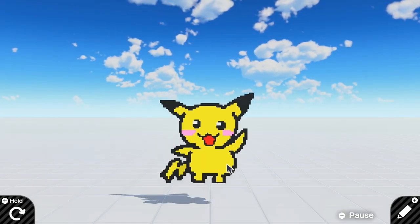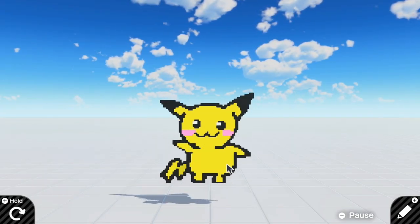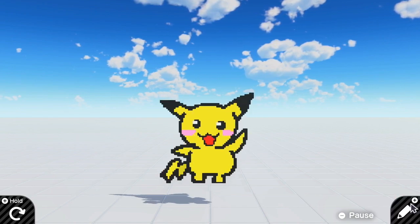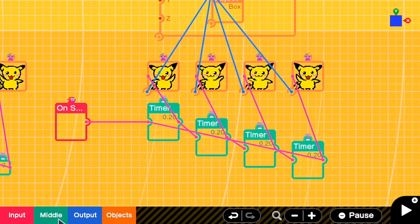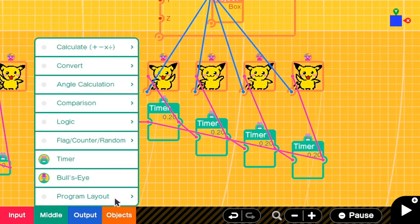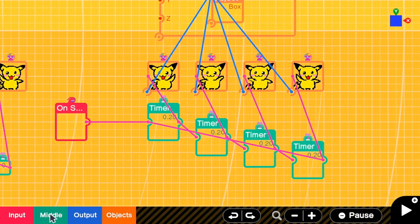You can see that the Pikachu went blank for a short period of time. That's because the first timer waits for 0.2 seconds before it shows the texture. To fix that, we need another timer that starts immediately after we have received on start signal. So we need one more timer.